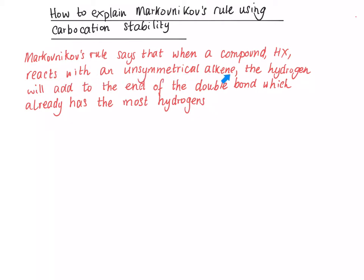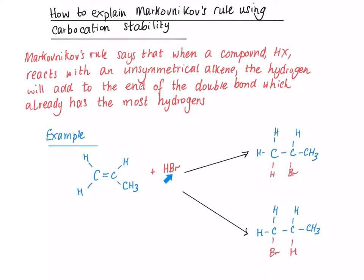We can explain why that happens if we think about the mechanism, the electrophilic addition, and the stability of the carbocations that get formed during the mechanism. The example we're going to look at is HBr adding to propene.